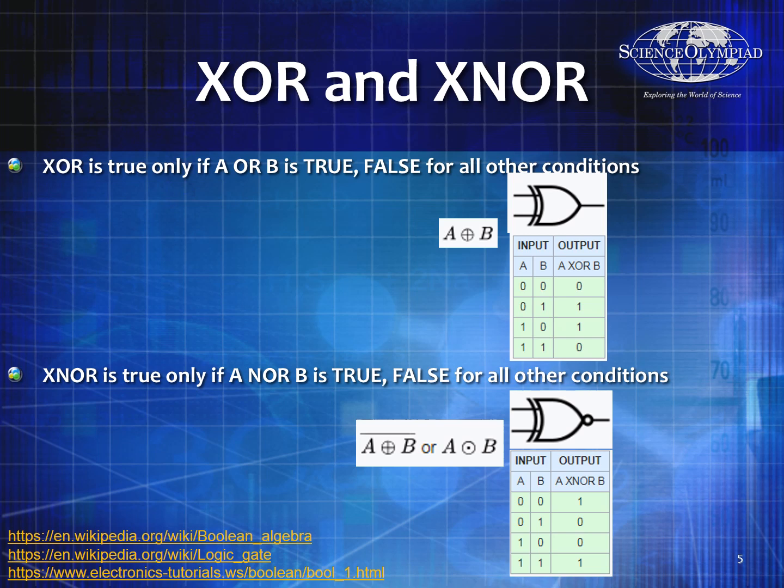You also have an exclusive OR and an exclusive NOR. The exclusive OR is true if A or B is true, but it's false if they're both true or both false. So an exclusive OR is true only for 0-1 or 1-0 inputs, and the other two combinations are zeros. You can write it as a plus sign with a circle around it, or draw a line behind the OR gate. The exclusive NOR is only true if you have two false inputs or two true inputs.